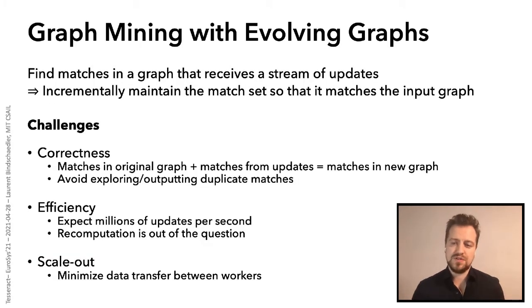So generally, graph mining algorithms and systems concern themselves with static graphs. In this paper, however, we're going to talk about graph mining in the different context of evolving graphs. So our goal is going to be to find the matches in an evolving graph that receives a stream of updates that changes its structure. Specifically, we want to incrementally maintain the set of all matches so that it always reflects the new state of the graph.